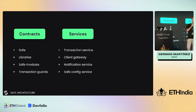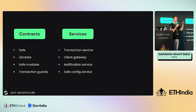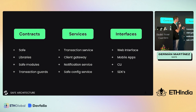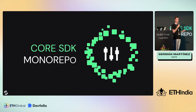We also have a layer of services that we run, but you can also run yourself. The most important one regarding this talk is the Safe Transaction Service, because it allows us to collect transactions proposed by any of the signers and also the signatures from other signers, so someone can execute a transaction finally. The last layer is the interfaces: web interface, mobile apps, CLI, and SDKs - specifically the Safe Core SDK.